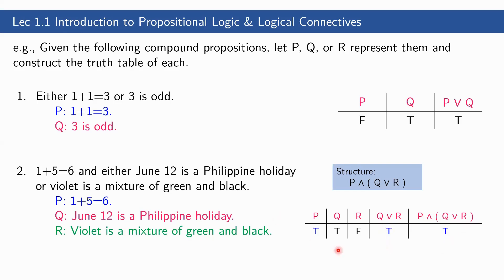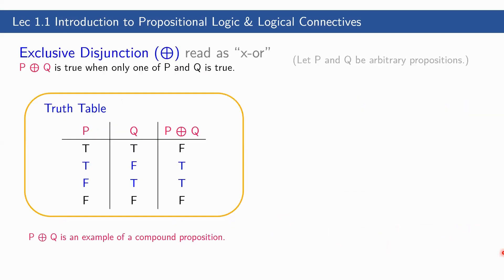Next is the exclusive disjunction, read as 'XOR.' P XOR Q is true when only one of P and Q is true. We use XOR when it is not possible for both P and Q to be true at the same time — these are applicable for mutually exclusive events.